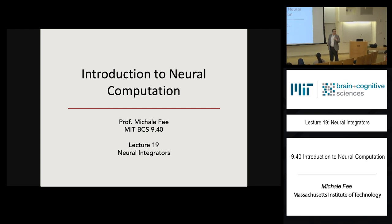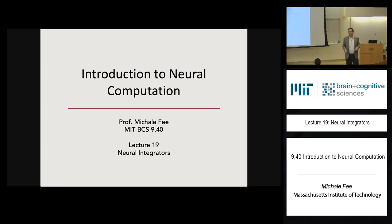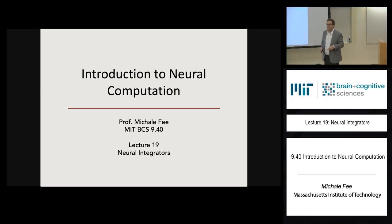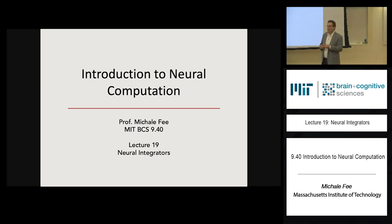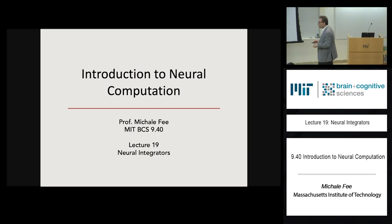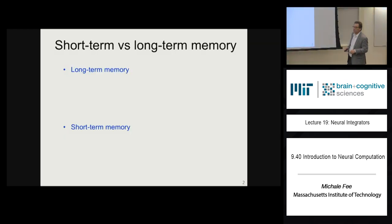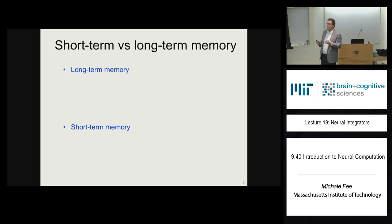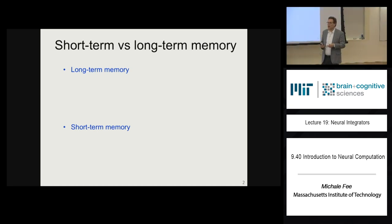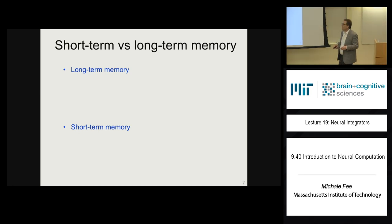Today we're going to continue talking about the topic of recurrent neural networks. Last time, we talked about recurrent neural networks that give gain and suppression in different directions of the neural network space. Today we're going to talk about the topic of neural integrators, which are an important topic in neuroscience because they are basically one of the most important models of short-term memory.